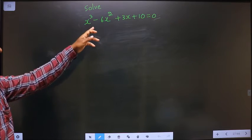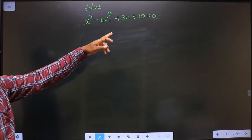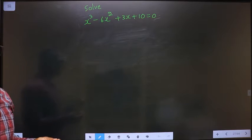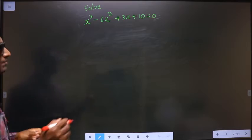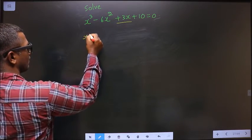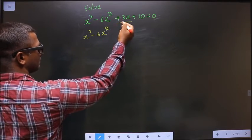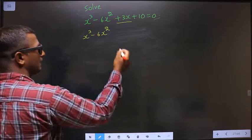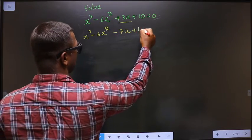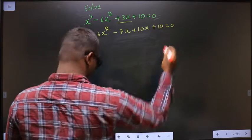Solve x cubed minus 6x squared plus 3x plus 10 equal to 0. To solve this, I have to change the x term, that is 3x. I change 3x and write it as minus 7x plus 10x, so the equation becomes x cubed minus 6x squared minus 7x plus 10x plus 10 equal to 0.